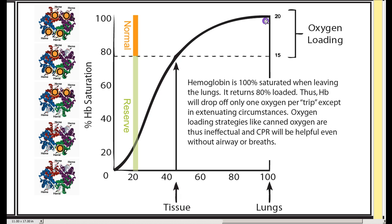The place I'd like to start here is in the lungs. In the lungs, hemoglobin is 100% loaded. So all of the hemoglobin is going to leave the lungs with 4 oxygens.